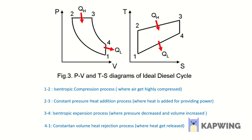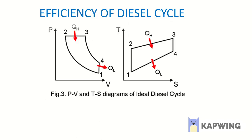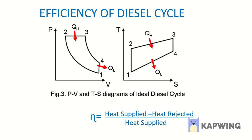This is all about the processes on which the diesel cycle works. Now let's derive an expression for the efficiency of the diesel cycle. The basic efficiency formula is: efficiency equals heat supplied minus heat rejected, divided by heat supplied.